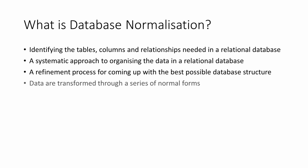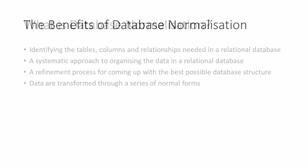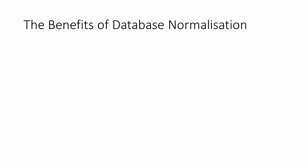During the normalization process, a relational database is transformed from one normal form to the next until an optimal structure is arrived at. Database normalization rarely eliminates all duplication of data, but what it does do is eliminate unnecessary duplication of data. This means that a normalized database is more space efficient.